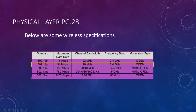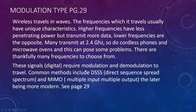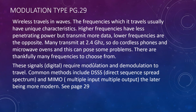For example, 802.11G, probably the most common industrial standard at time of writing, has a maximum data rate of about 54 megabits per second and a frequency band of 2.4 gigahertz. We're moving more toward 5 gigahertz now. Higher frequencies have less penetrating power but can transmit more data; lower frequencies are the opposite.